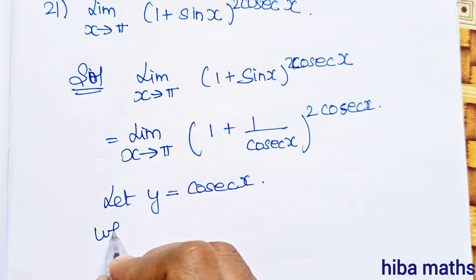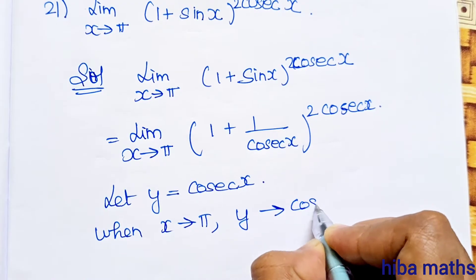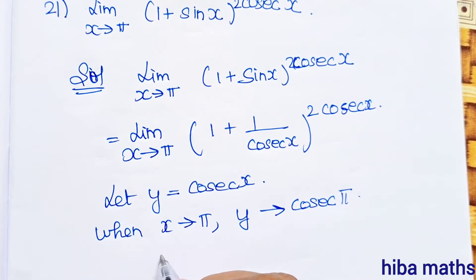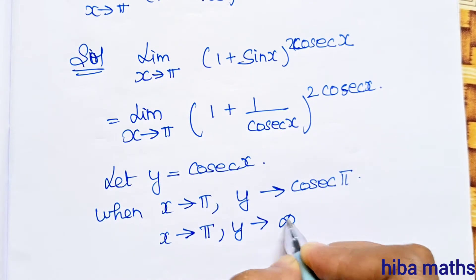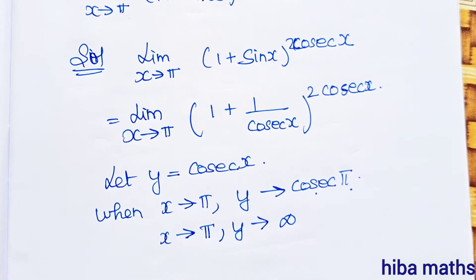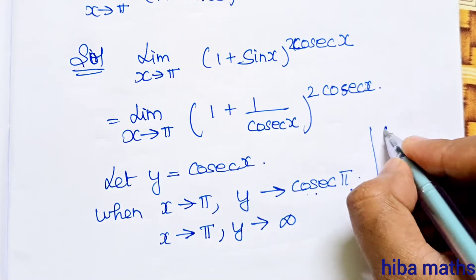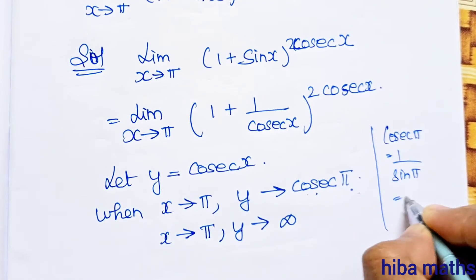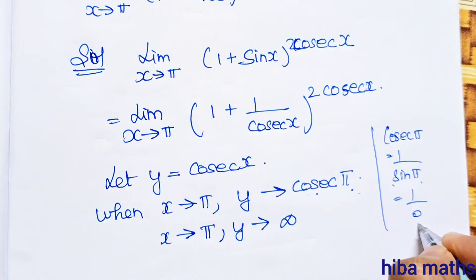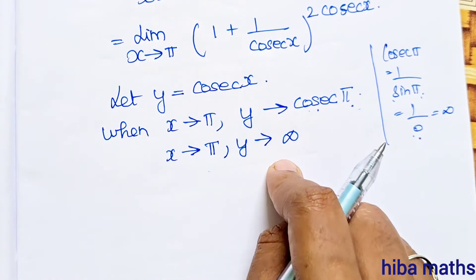When x turns to pi, y equals cosecant pi. Cosecant is 1 by sin, so 1 by sin pi equals 1 by 0, which equals infinity. Therefore when x turns to pi, y equals infinity.